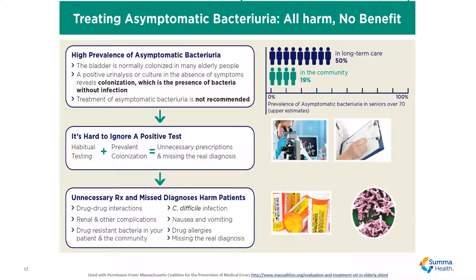Treating asymptomatic bacteria: all harm, no benefit. There is a high prevalence of asymptomatic bacteria in our older population as previously discussed. The bladder is normally colonized in many of these older patients. A positive urinalysis or culture in the absence of symptoms reveals colonization — the presence of bacteria without infection, also known as asymptomatic bacteria — and treatment of asymptomatic bacteria is not recommended. It is hard to ignore a positive test, but a combination of habitual testing and prevalent colonization in this patient population can lead to unnecessary prescription and missing the true diagnosis.